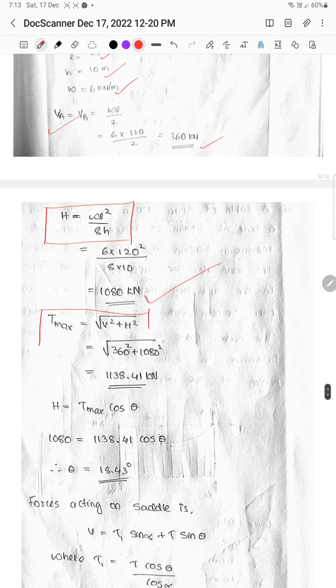Maximum tension is calculated using the equation: T max equals square root of V squared plus H squared. Using VA and VB values, we get square root of 360 squared plus 1089.8 squared.